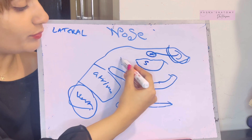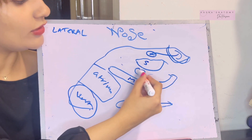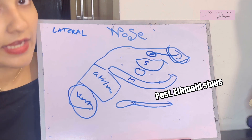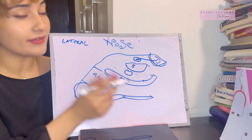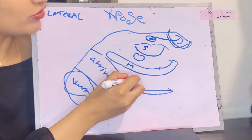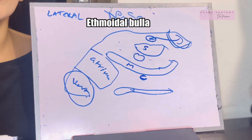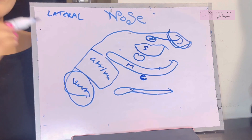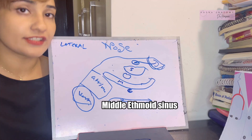Beneath the superior concha is the superior meatus. Within the superior meatus lies the opening of the posterior ethmoidal air sinus. Then we have the middle meatus — in the middle meatus, almost all openings lie. First, draw this rounded projection known as the ethmoidal bulla. In the upper margin of the ethmoidal bulla, there is the opening of the middle ethmoidal air sinus.